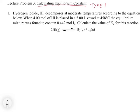Let's look at what the problem says. Hydrogen iodide decomposes at moderate temperatures according to the equation below. When 4 moles of HI is placed in a 5-liter vessel at 458°C, the equilibrium mixture was found to contain 0.442 moles of I₂. Calculate the Kc for this reaction.